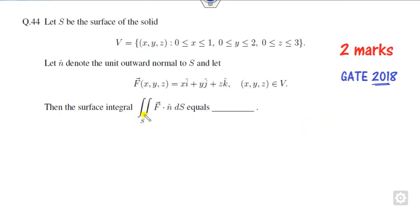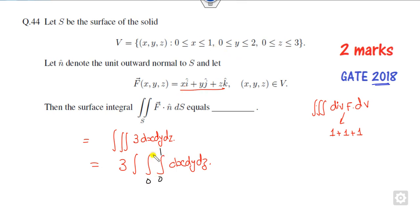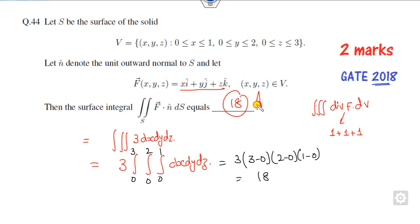Look at another question — again it is double integration. You convert to triple integration using the divergence theorem. The divergence of f is the partial derivatives: 1 + 1 + 1 = 3. So the integral becomes 3 dx dy dz, with limits x from 0 to 1, y from 0 to 2, and z from 0 to 3. Since all limits are constant, integrating gives 3 × 1 × 2 × 3 = 18, which is the right answer.